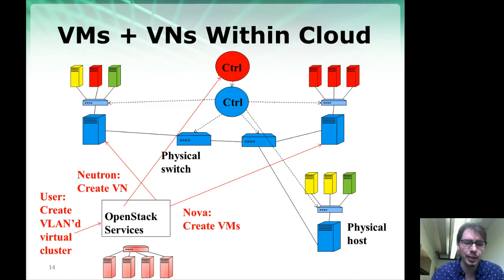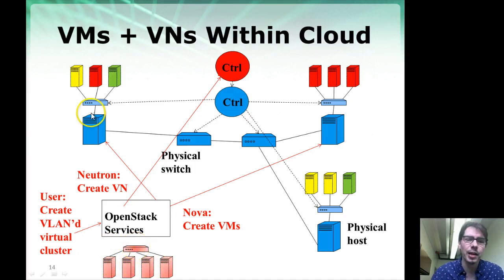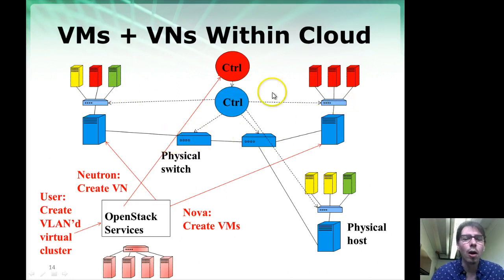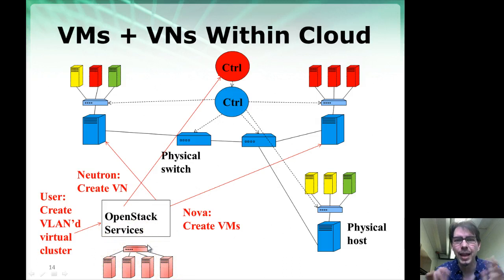From the user perspective, what they see is a virtual network of virtual machines connected by a virtual switch. On the infrastructure itself, you have a combination of multiple servers running multiple virtual machines, with a virtual switch on each endpoint and physical switches in between. All of this is abstracted and presented to the user as a flat virtual network of virtual machines managed by the OpenStack service.